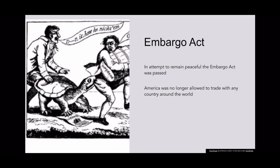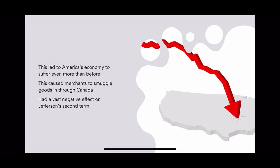In an attempt to remain peaceful with Great Britain and France, the Embargo Act of 1807 was passed. With the Embargo Act in effect, America could no longer trade with any nation around the world. This caused America's economy to suffer even more than it already had, brought a negative view on Thomas Jefferson's second term, and also led to merchants smuggling goods through Canada.